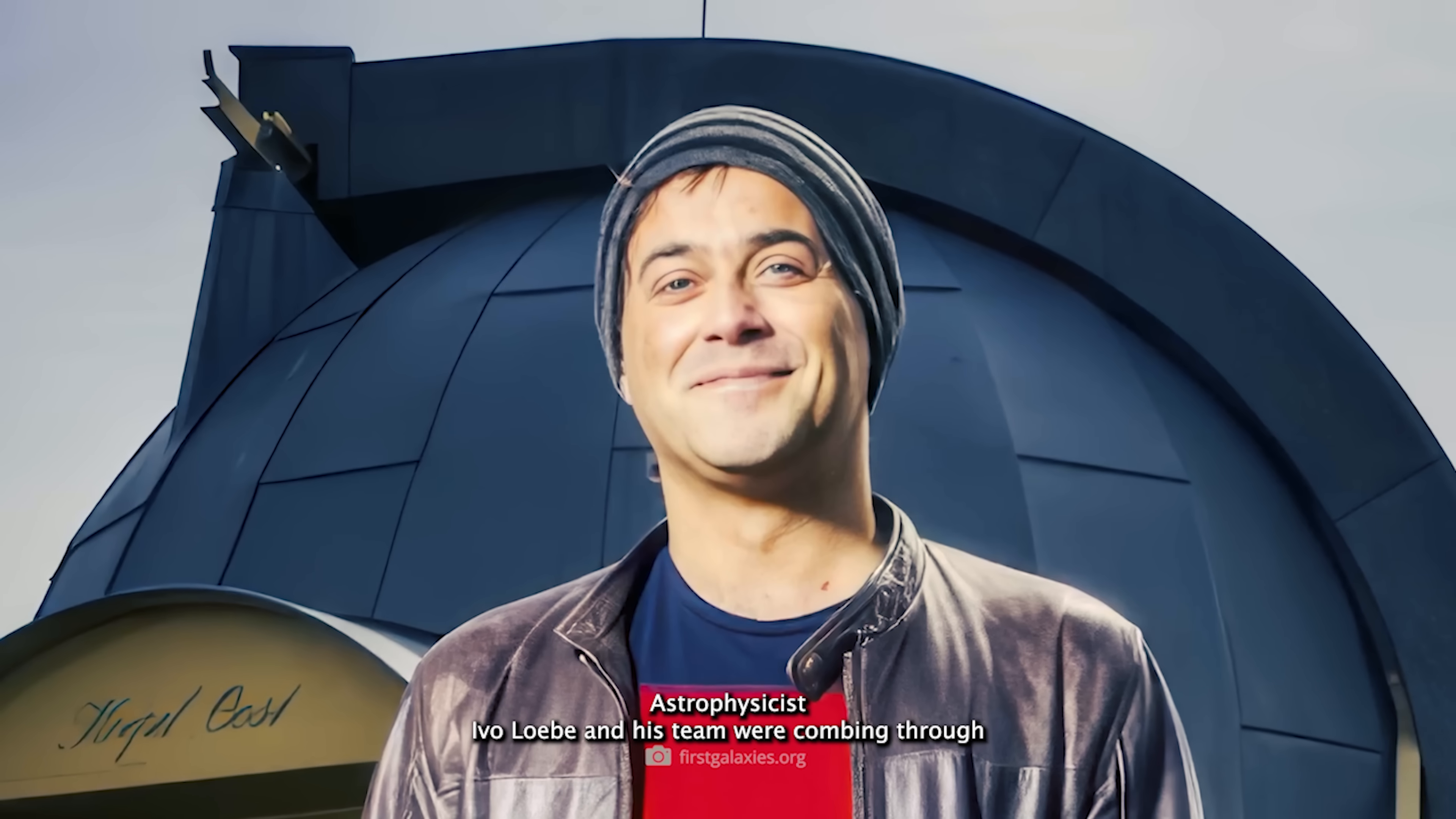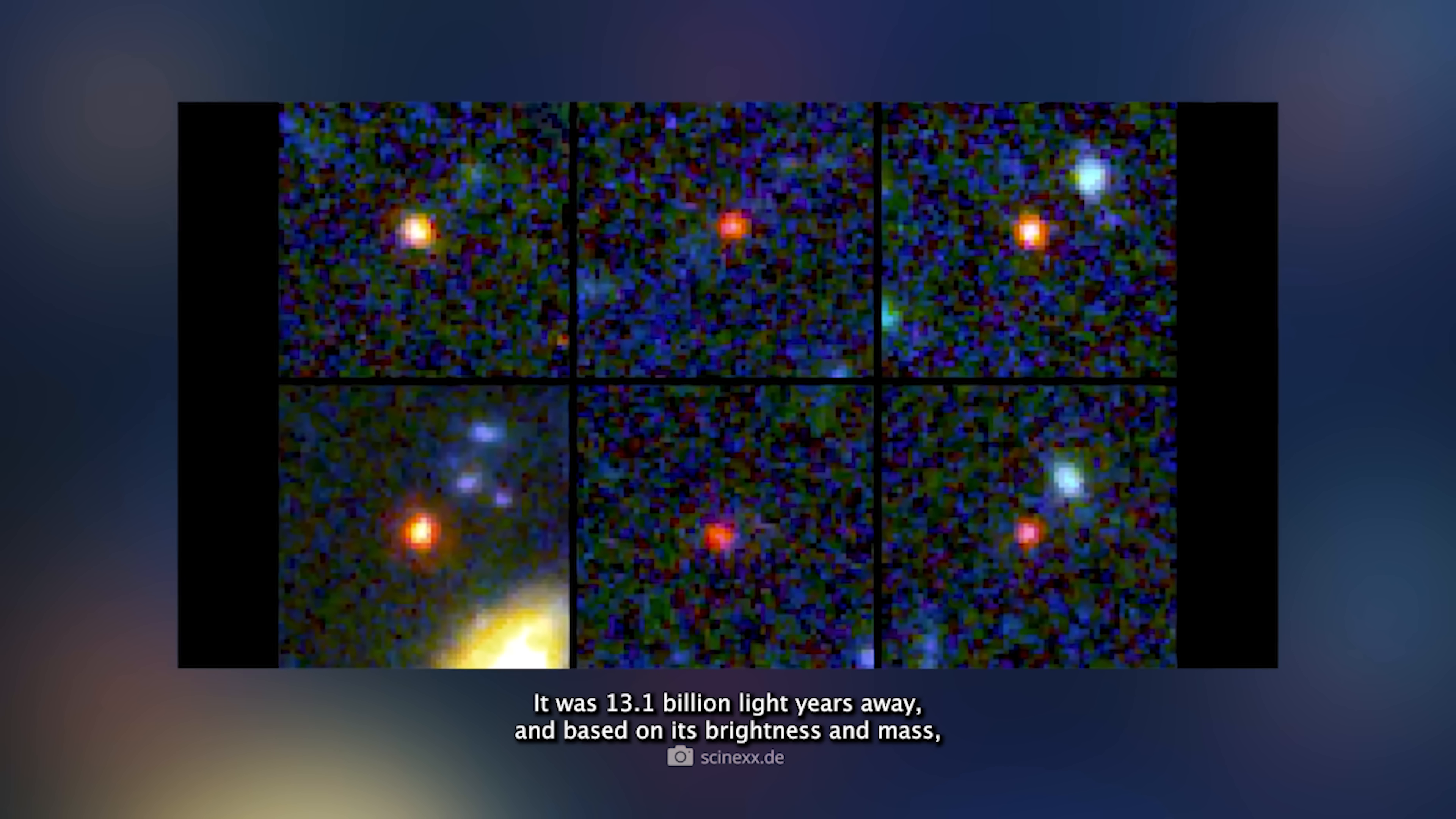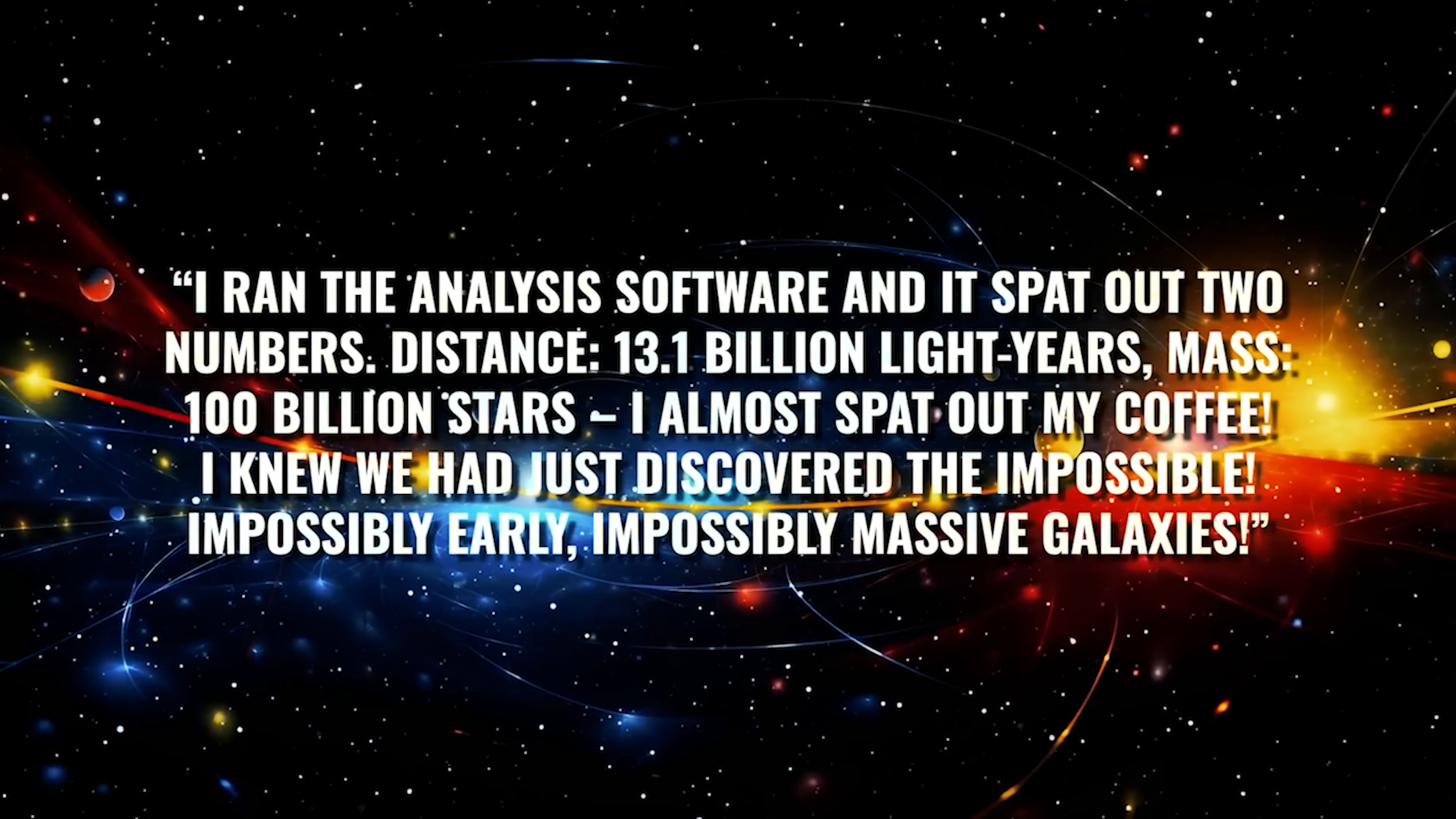Astrophysicist Ivo LeBay and his team were combing through Webb's early release images when they stumbled across the unthinkable. One galaxy in particular caught their eye. It was 13.1 billion light-years away, and based on its brightness and mass, it appeared to contain the equivalent of a hundred billion stars. LeBay recalled the moment with disbelief: 'I ran the data through the software. It returned two numbers—distance and mass. I almost spat out my coffee.'